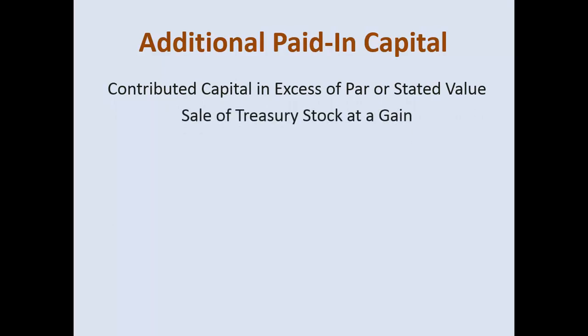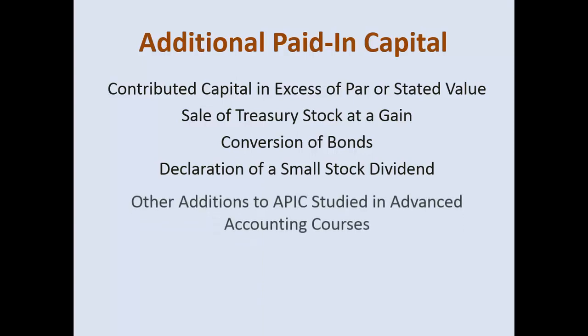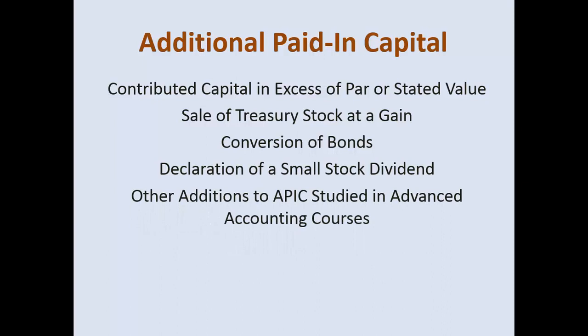Additional paid-in capital is contributed capital in excess of par or stated value. The sale of treasury stock at a gain will be talked about in a different video. Treasury stock has very specific and strict accounting rules as it relates to later selling at a gain or loss, and it all surrounds equity. You could have an additional paid-in capital account set up just to track gains and losses, or for conversion of bonds, or for declaration of small stock dividends. APIC stands for additional paid-in capital and is studied in more advanced accounting courses, in depth in intermediate accounting.